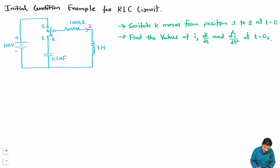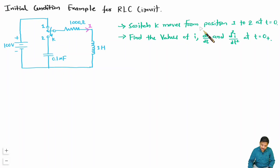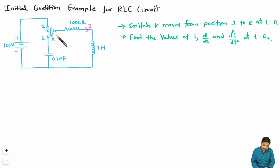Here we have been given one very interesting circuit in which we have a resistance of 100 ohm, an inductor of 1 henry, and a capacitor of 0.1 microfarad. This switch k is moving from position 1 to position 2 at time t equals 0. Current i is given and we are required to find current i, di/dt, and d²i/dt² at time t equals 0 plus.